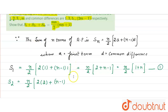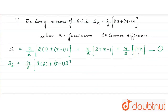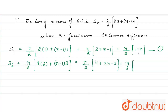Now let's find S2. For S2, the first term is 2 and the common difference is 3. So S2 = N/2 [2(2) + (N−1)(3)] = N/2 [4 + 3N − 3] = N/2 (1 + 3N). Give it equation number 2.